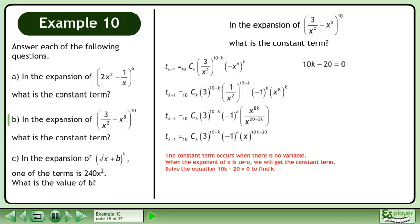The constant term occurs when there is no variable. When the exponent of x is 0, we will get the constant term. Solve the equation 10k - 20 = 0 to find k.